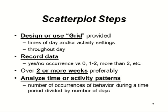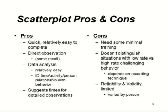Sometimes you'll use a diagonal slash if the behavior happens once, a second slash to make an X if it happens more than once, and fill in the block if it happens more than twice. That's easy to do and gives you more detail than just whether it occurred or not. The advantages of a scatter plot are that it's really easy to do — it's a form of direct observation but probably one of the simplest. It's also easy to analyze by simply looking for patterns across the time of day.